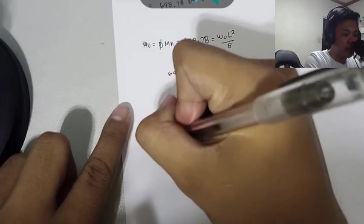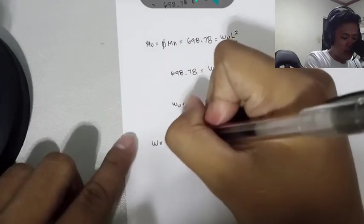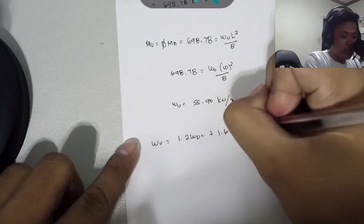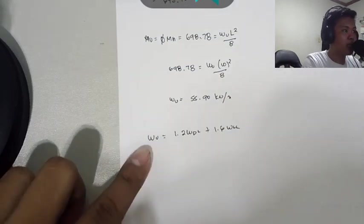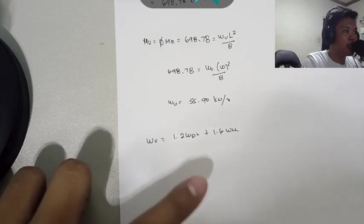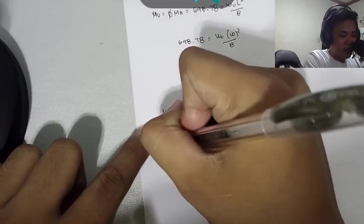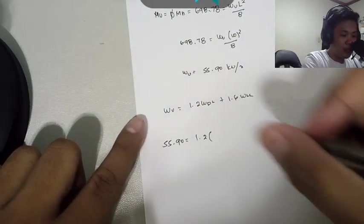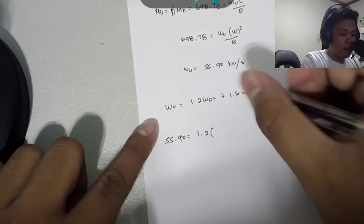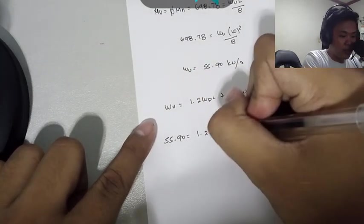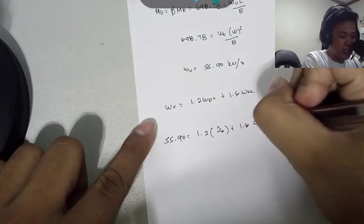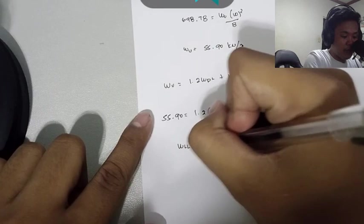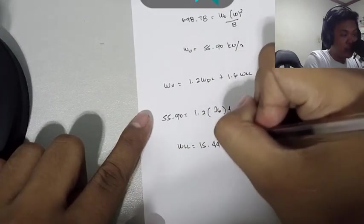From NSCP 2015, we'll use WU equals 1.2 times dead load plus 1.6 times live load. By direct substitution, we have 55.90 equals 1.2 times 26 kilonewton per meter dead load plus 1.6 times live load. We get a value of live load of 15.44 kilonewton per meter.